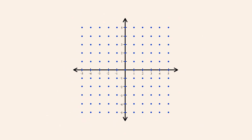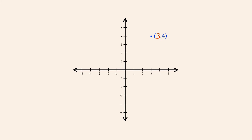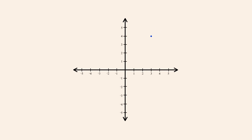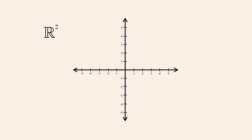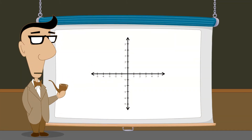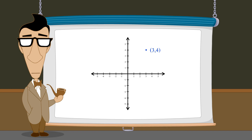We can locate the positions of these points using a pair of number lines. For each ordered pair, the first element corresponds to a position on the horizontal number line and the second element corresponds to a position on the vertical number line. The points formed by the Cartesian product of the set of integers with itself form an infinite grid of points, spaced one unit apart. If instead of using the set of integers Z we form the Cartesian product of the set of real numbers R with itself, we create a continuum of points which completely fill the plane. Every ordered pair of two real numbers corresponds to a unique point in this two-dimensional space. This system is called the Cartesian coordinate system, and the elements of an ordered pair which correspond to a point are called the coordinates of the point.